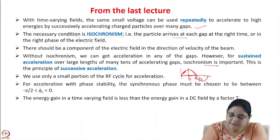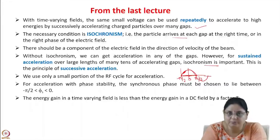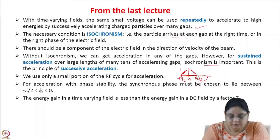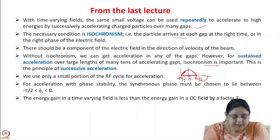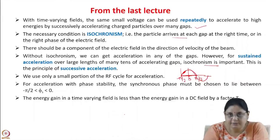If you want to accelerate with phase stability, you have to choose your synchronous phase as lying between −π/2 and 0. We also saw that the energy gain in a time-varying field is less than the energy gain in a DC field by a factor of T, where T is known as the transit time factor.